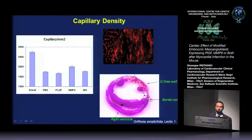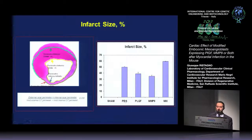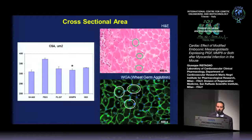In more detail: capillary density was improved and was measured in the border area. For infarct size, there was a trend toward amelioration also in the PLGF-expressing group; however, the greater improvement was observed only after injection of MAPs expressing MMP9. The cross-sectional area was also significantly lower in the group of mice treated with MAPs expressing MMP9.